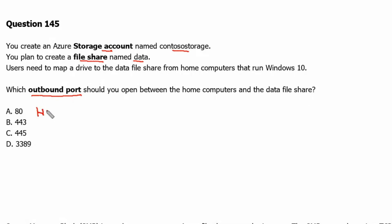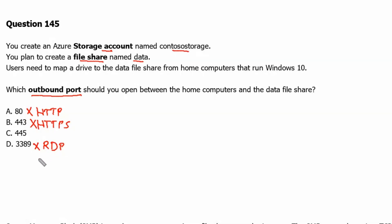Port 80 is used with HTTP web traffic, therefore this would not be the correct answer. Option B: port 443 — port 443 is used with HTTPS traffic, therefore option B is not the correct answer. Option D: port 3389 — that is used with Remote Desktop connections or RDP, therefore this would not be the correct answer.